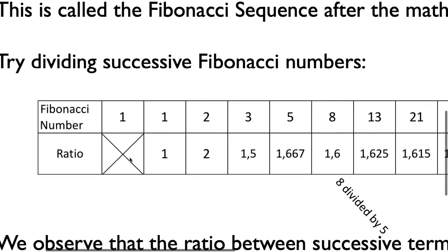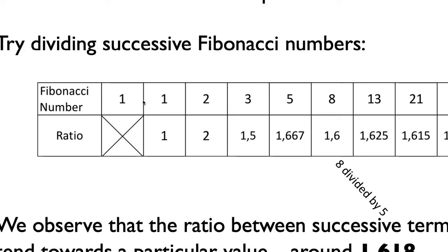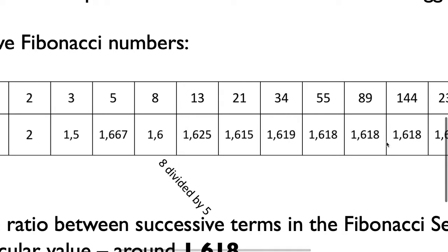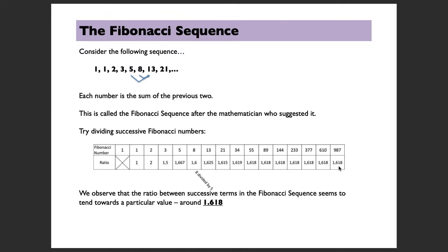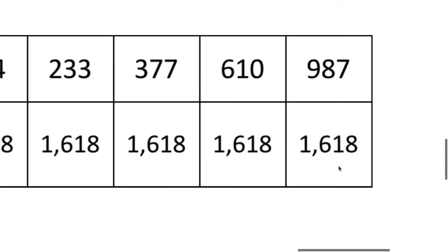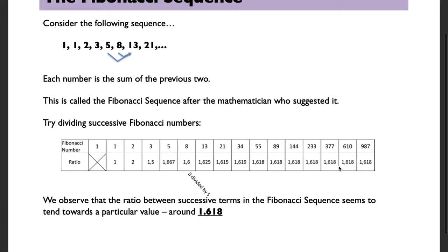Zooming in: the first two Fibonacci numbers are 1 and 1. 1 divided by 1 is 1, so the ratio between the first two is 1. Then 2 divided by 1 is 2, 3 divided by 2 is 1.5, 5 divided by 3 is 1.667, 8 divided by 5 is 1.6, and 13 divided by 8 is 1.625. As we continue, this ratio tends to converge towards around 1.618.